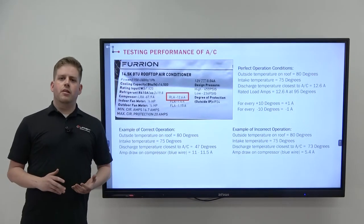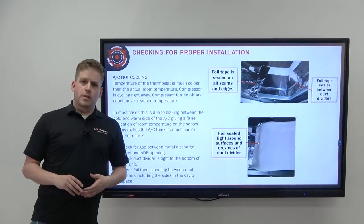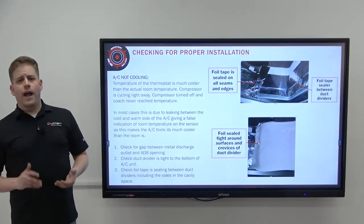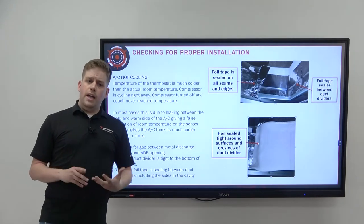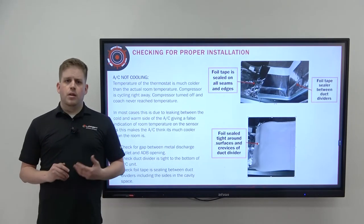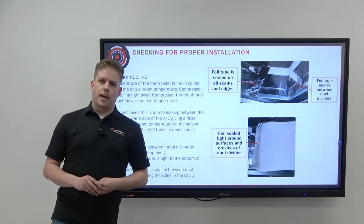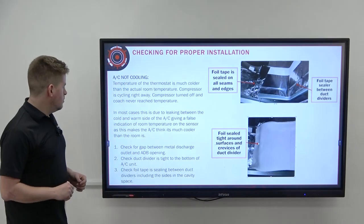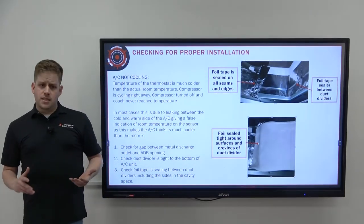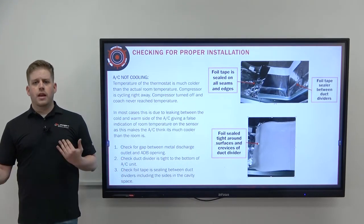Now let's check proper installation. Make sure your foil tape is along all seams and edges of your divider wall so no air can leak between the return and discharge. Any air leaking between return and discharge will continue to cool and can cause the unit to freeze up — once frozen, no airflow passes and you have very poor performance. Also make sure your PE foam is in place and all surfaces are sealed with foil tape.